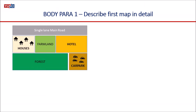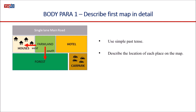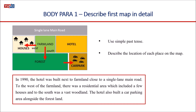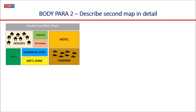In body paragraph one, you describe the first map in detail. Since the map is of the year 1990, we'll use the simple past tense. All you have to do is describe the location of each place on the map — what was located where. For instance: 'In 1990, the hotel was built next to farmland, close to a single lane main road. To the west of the farmland there was a residential area which included a few houses, and to the south was a vast woodland. The hotel also built a car parking area alongside the forest land.' Just focus on describing the location of each place on the map.